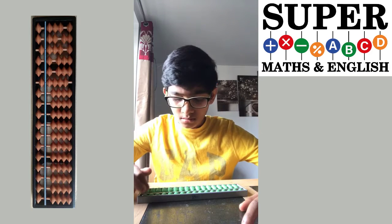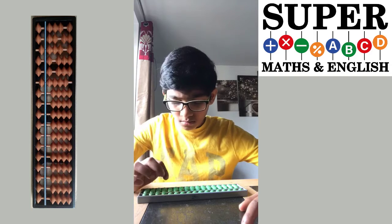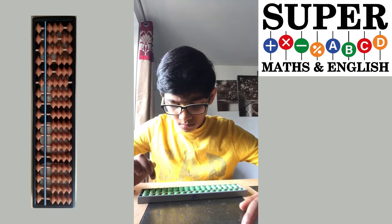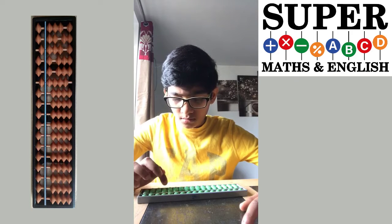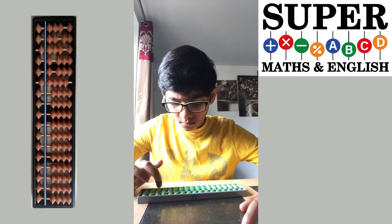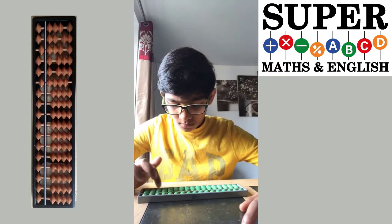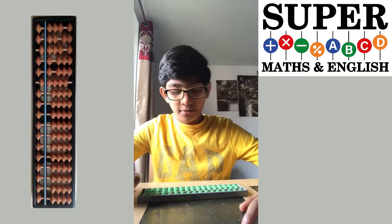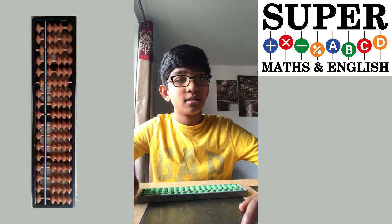46,625 plus 5,654 plus 1,745 minus 7,462 minus 29,541. Answer: 17,021. Correct. Next.